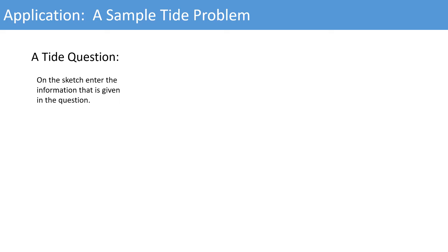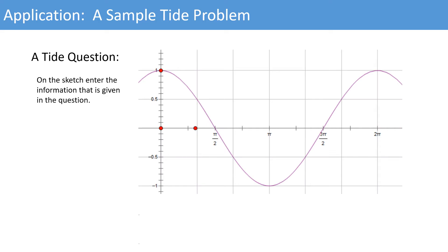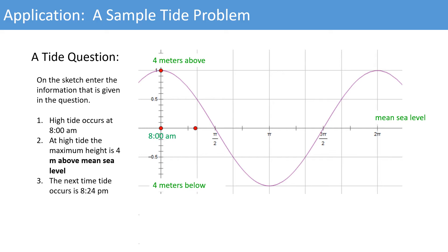On the sketch, enter the information that is given in the question. High tide occurs at 8 o'clock a.m. At high tide, the maximum height is 4 meters above mean sea level. The next time high tide occurs is 8:24 p.m.